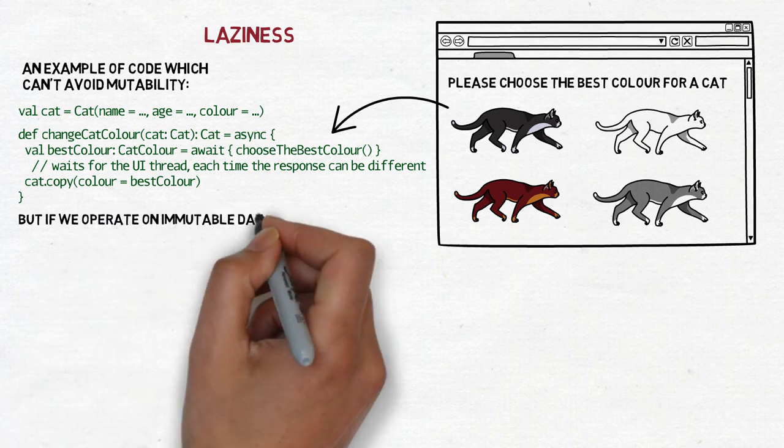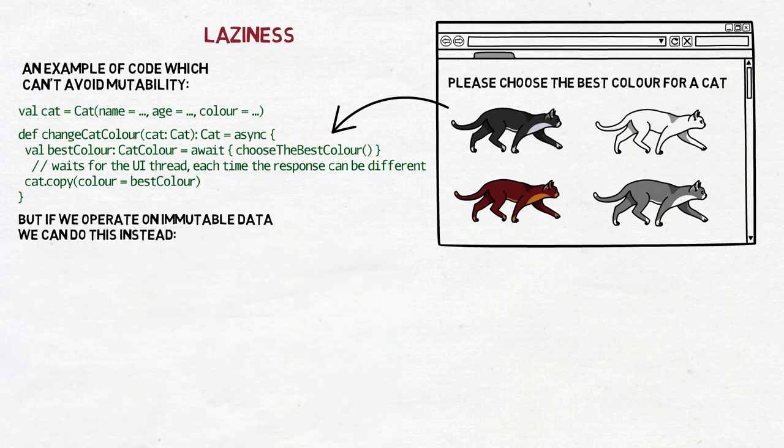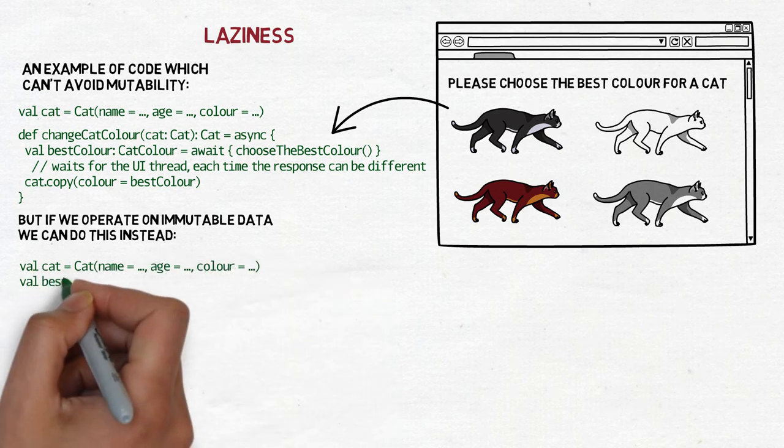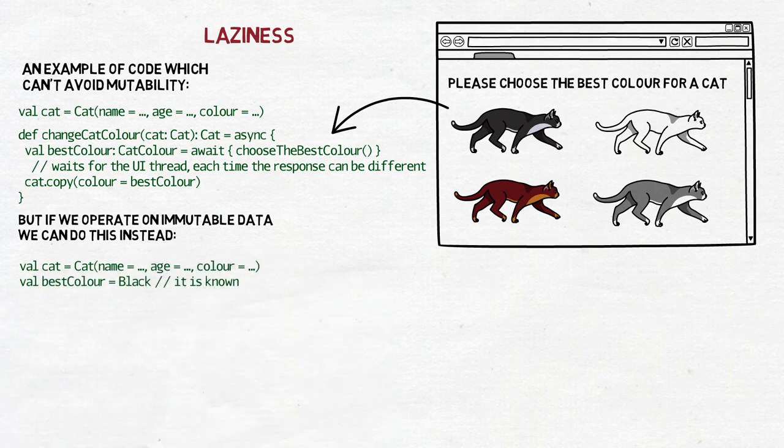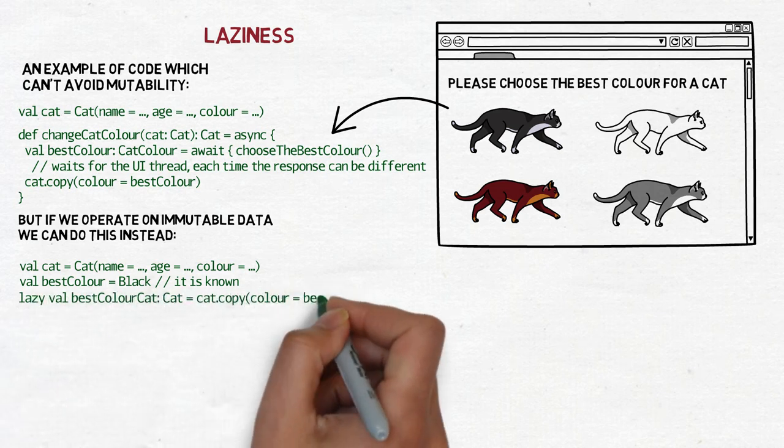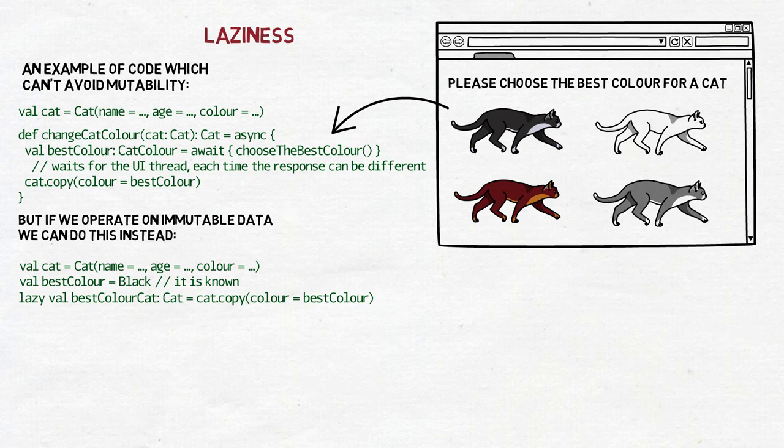And since the constants don't change, it's enough if you access them once, compute the result, remember it, and the next time you can just return what you remembered. Essentially, the function turns into another constant, only its computation is lazy, meaning it's not done when the constant is declared, but when it's accessed for the first time.